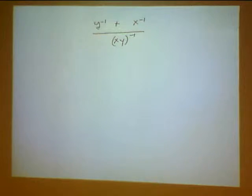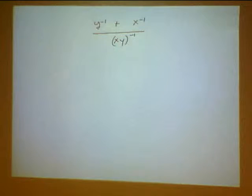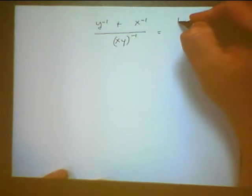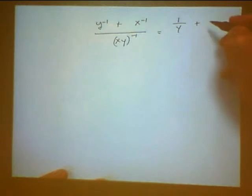And once again, because we have two different terms in the numerator, when I take the y minus 1 and make that a positive exponent, I do not move it to the bottom of the whole fraction, but instead I just move it to the bottom of its own fraction. So y to the minus 1 equals 1 over y, x to the minus 1 equals 1 over x,